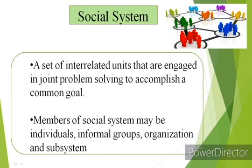The fourth element of diffusion is the social system. As we learned in rural sociology, a social system is a set of interrelated units that are engaged in joint problem solving to accomplish a common goal. That is called a social system.